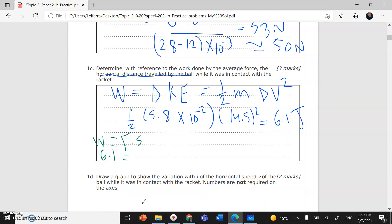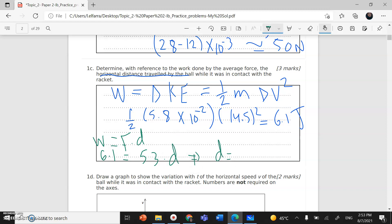So times displacement d. I can find d: 6.1 divided by 53 will give me 0.12 meters.